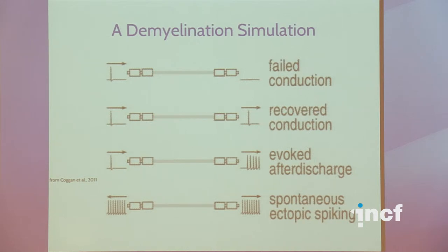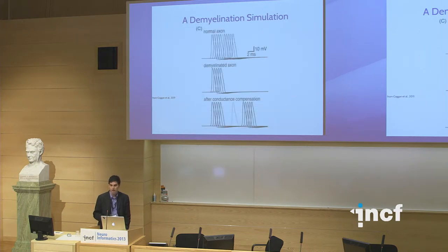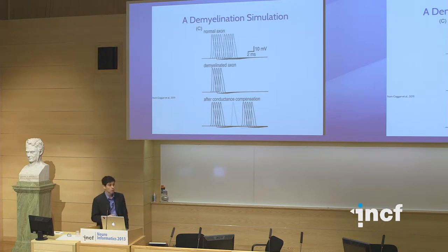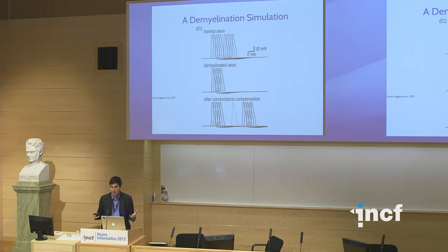The model also reproduces conditions such as evoked after-discharge, where you get an action potential followed by way too many at the end, and spontaneous ectopic spiking, where action potentials come back in the other direction. These are things you can start to explore computationally through ion channel-based modeling — seeing progression of the action potential under normal or demyelinated conditions, and looking at after-conductance compensations. These models go from what axons do down to some of the ion channel dynamics underlying them.